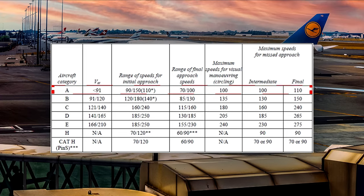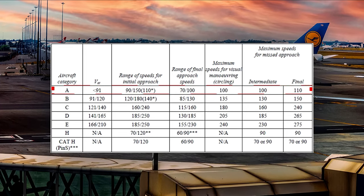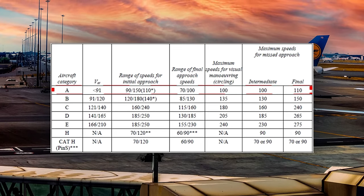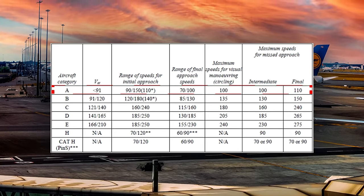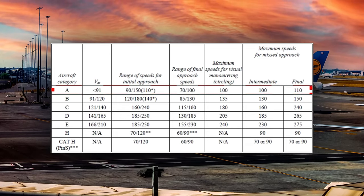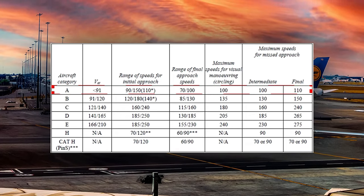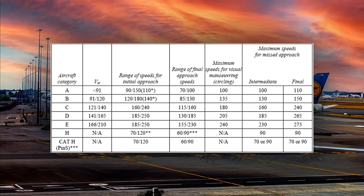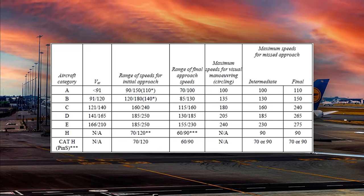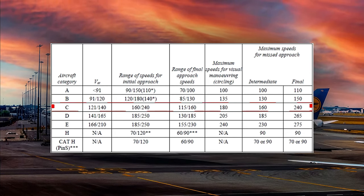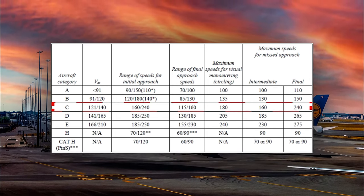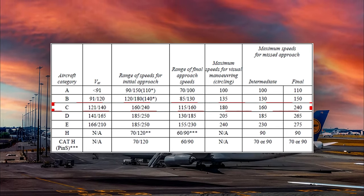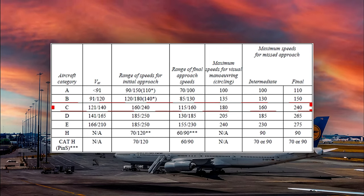For example, a small Cessna 172 aircraft will fly between 90 and 150 knots during the initial approach, and over the threshold of the runway — marked as VAT in the chart — the speed will be less than 91 knots. Therefore, that particular aircraft belongs to approach category A. A common passenger aircraft, the Airbus A320, will fly between 160 and 240 knots during initial approach and slow down to somewhere between 121 and 140 knots over the threshold, assigning this aircraft to category C.